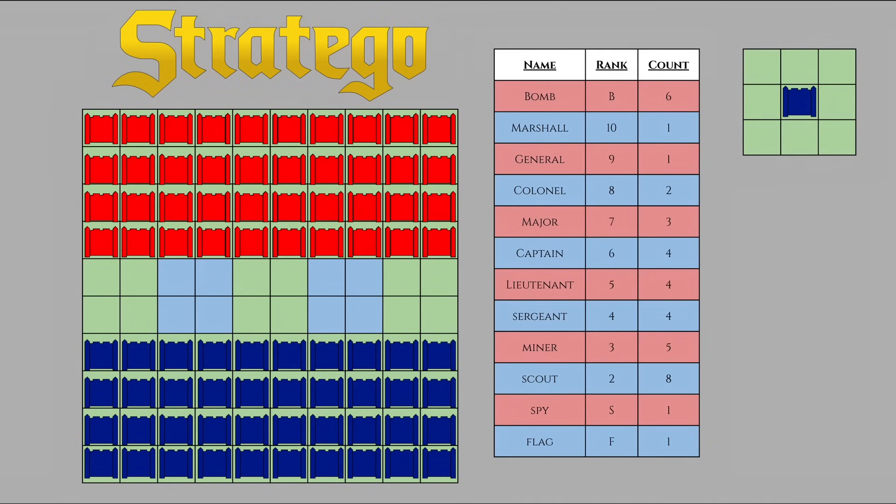Players take turns moving one piece at a time, moving one square at a time, following only up, down, left, or right, with no diagonals. The only exception to this rule is the scout, who can move like a rook in chess, any squares in its line of sight, or the bombs in the flags, which can't move.